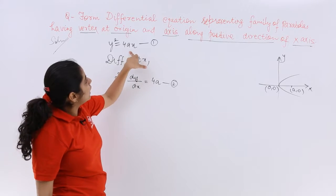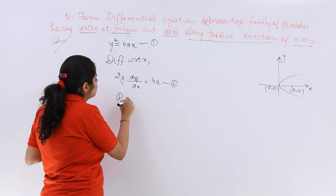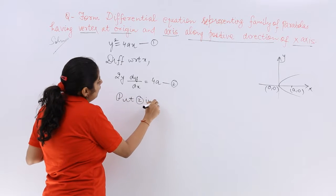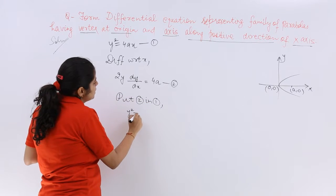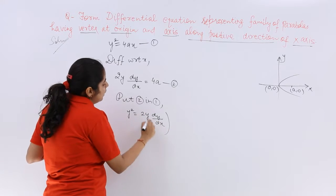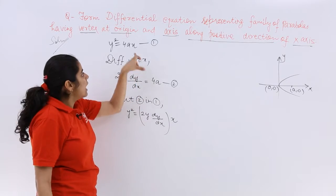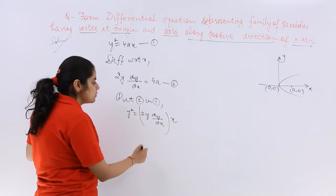Now let's put 2 in 1 because 4a is already there. So it becomes y² = 4ax which is 2y dy/dx multiplied by x, because 4a is giving this value and x is already there.